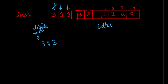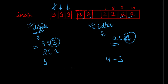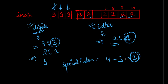When we encounter a letter, we update its frequency in the letter dictionary. For example, 'a' appears 4 times so its count is 4, and digit 2 has a frequency of 2. Now we find the maximum frequency — the highest occurring letter is 'a' with frequency 4, and the highest occurring digit is 9 with frequency 3. For the special index, we take the absolute difference: 4 minus 3 equals 1, so the special index is 1.